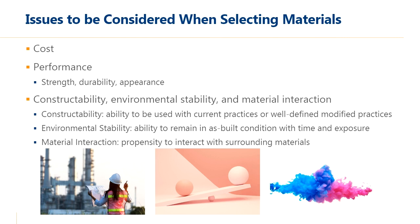Issues to consider when selecting materials typically include cost — how expensive is the material to the project — as well as performance: strength, durability, and appearance. But some less common factors that tend to result in issues are related to constructability, environmental stability, and materials interactions the material may encounter in service. Constructability refers to the ability for a material to be used with current or well-defined modified practices. Environmental stability refers to the ability for the material to remain in its as-built condition over time and with exposure to the environment. Materials interactions refers to the propensity for that material to interact with surrounding and adjacent materials it may come into contact with in service.